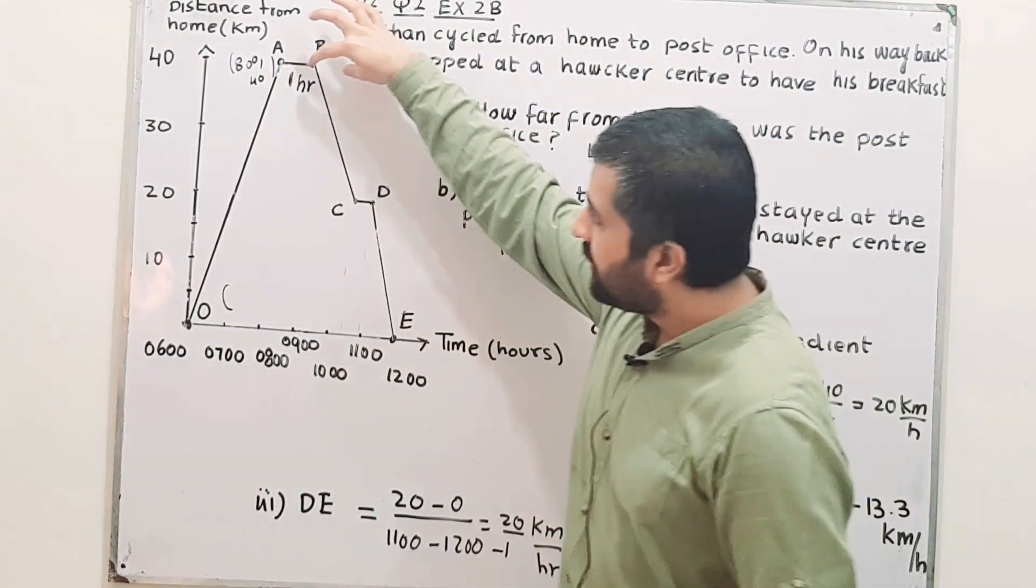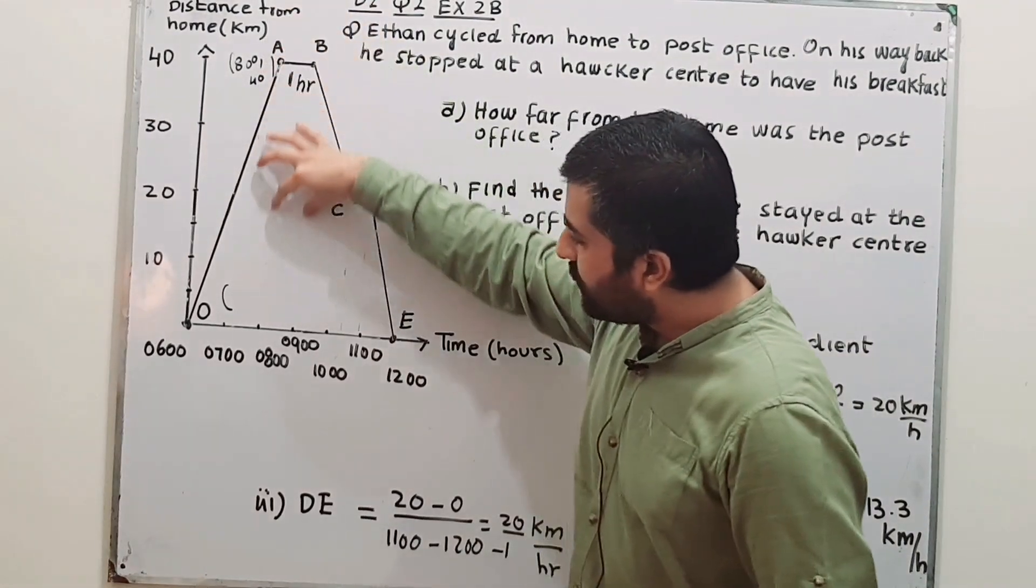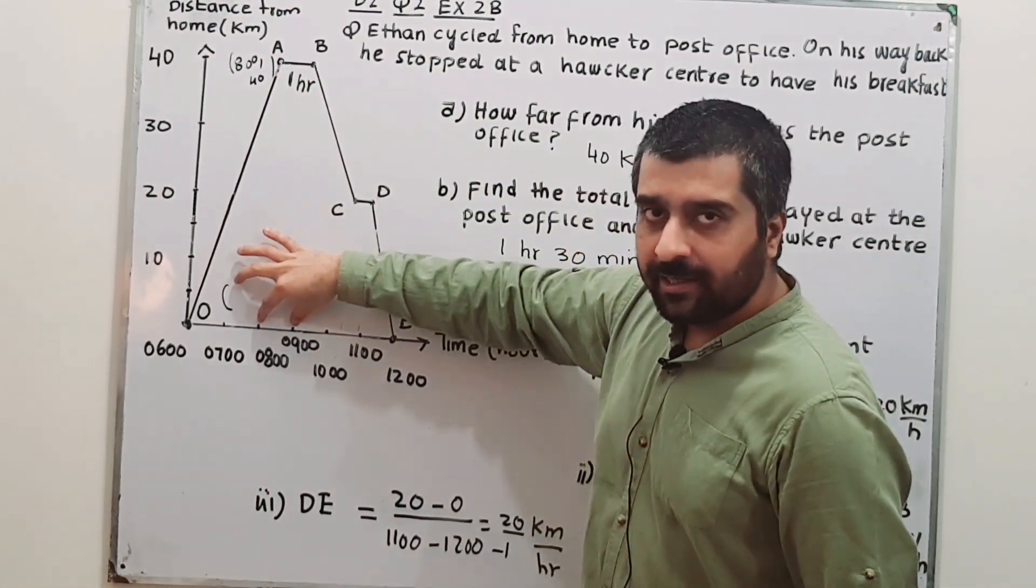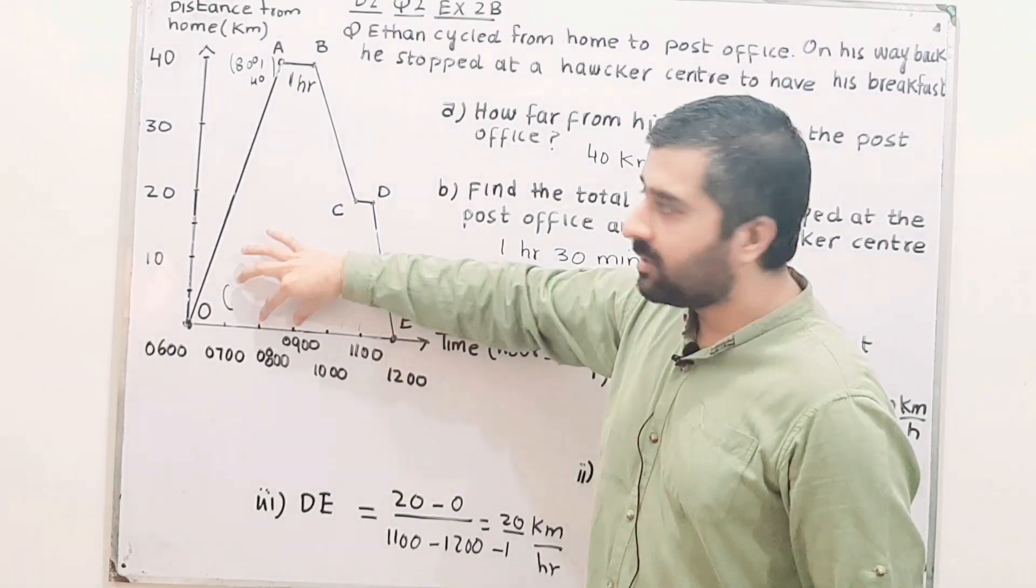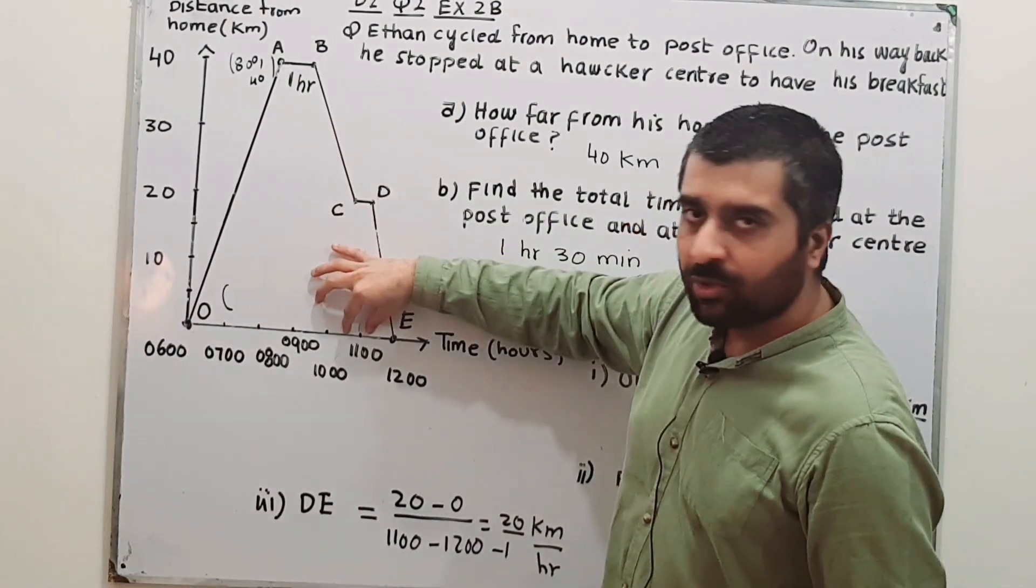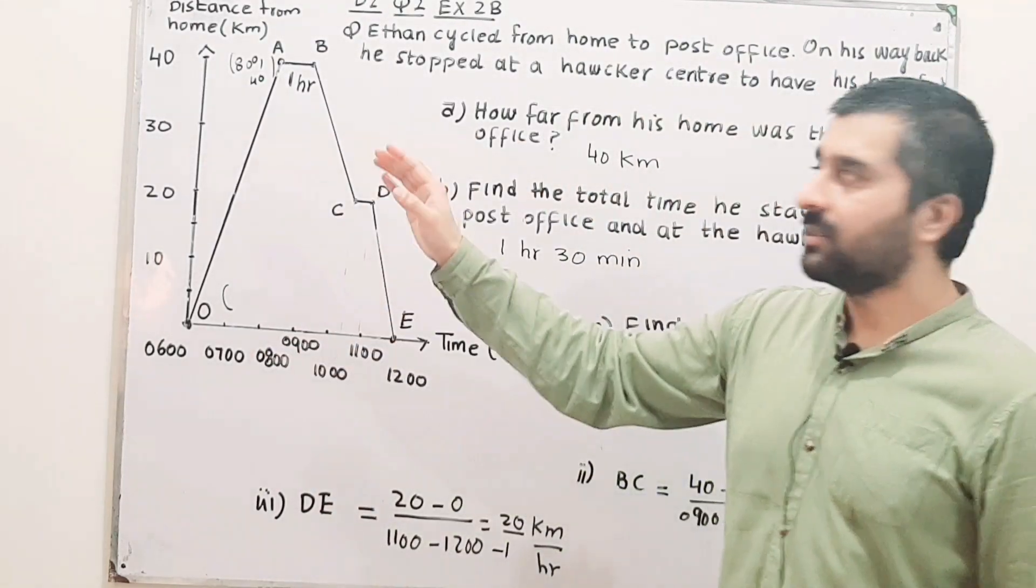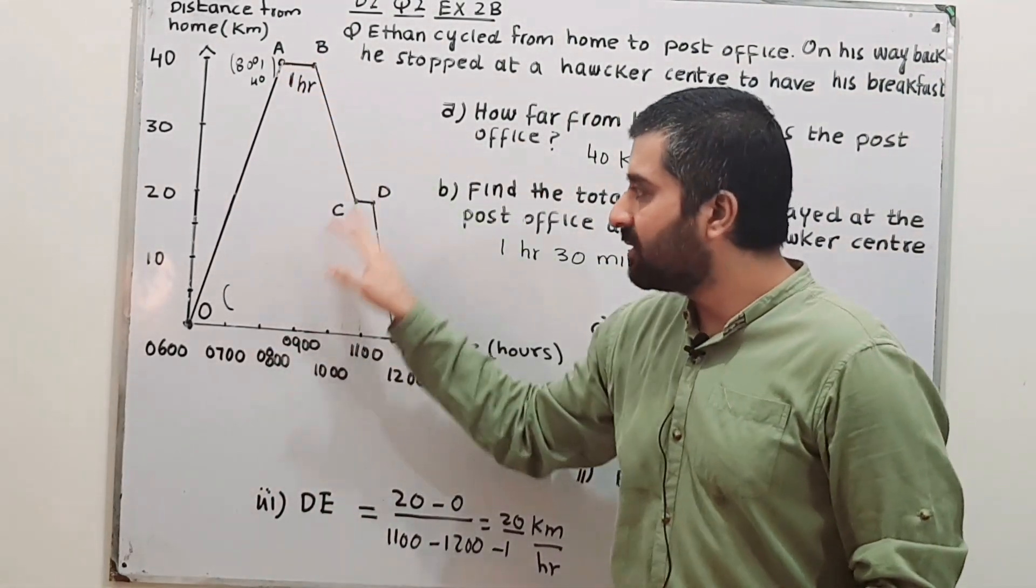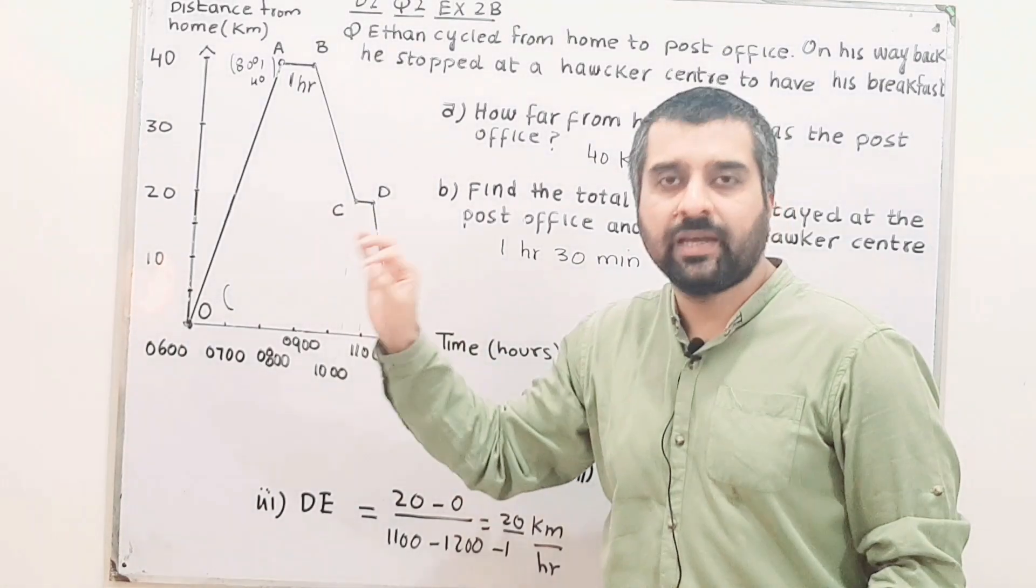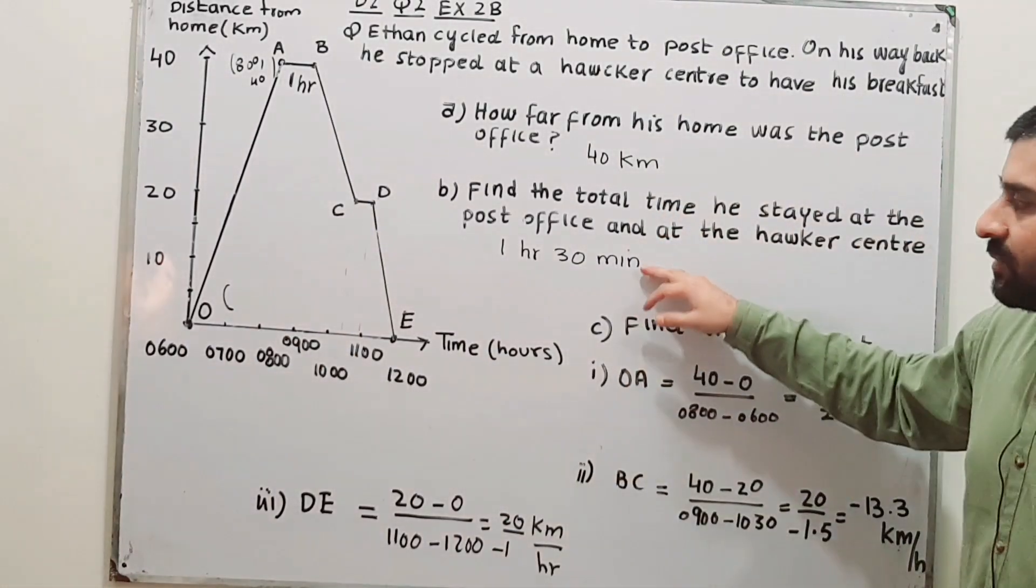For AB, you can have your values. This is from 8 till 9, meaning 1 hour, and from C to D, it is almost half an hour. So the total time for both his stays at the post office and at the hawker center is 1 and a half hours. Answer is 1.5 hours.